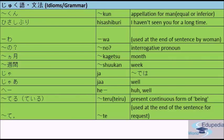The next one is 'hisashiburi' — this is a phrase used to mean 'long time no see' or 'I haven't seen you for a long time'. The next one is 'wa', used at the end of a sentence by a woman to indicate emotion or admiration — this is used only by women. The next one is 'no', an interrogative pronoun used at the end of a sentence.